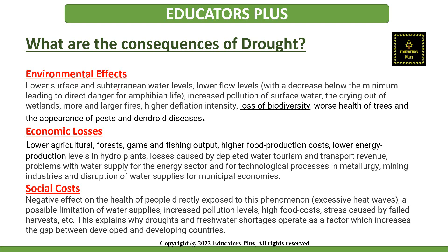The consequences of droughts can be divided into three main categories: environmental, economic, and social. Environmental effects include: lower surface and subterranean water levels; lower flow levels, which can fall below the minimum leading to direct danger to amphibian life; increased pollution in surface water; drying out of wetlands; larger and more frequent fires; higher deflation intensity; loss of biodiversity; and adverse health of trees along with the appearance of pest and dendroid diseases.